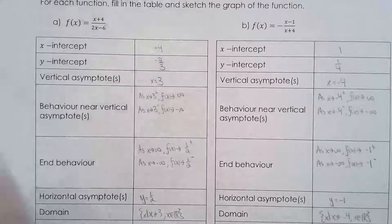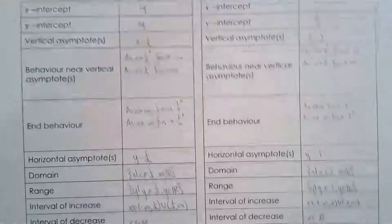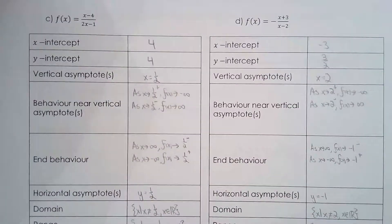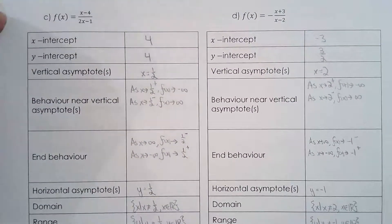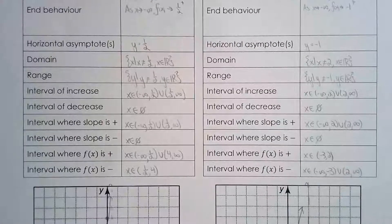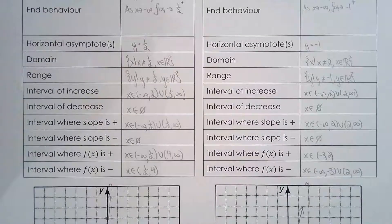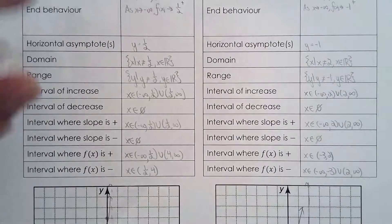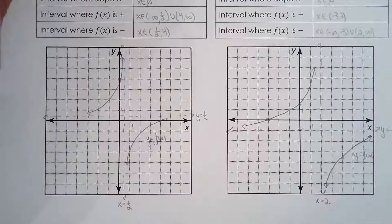Okay, same could be said for question two. Get the intercepts, get the asymptotes, and because you know that the horizontal asymptote is not crossed, there is only one graph you can have.